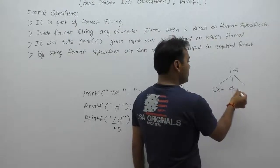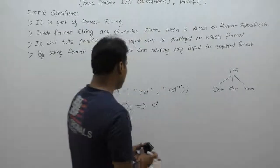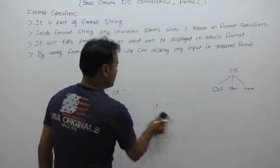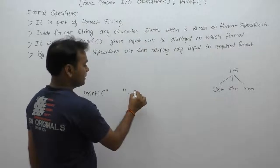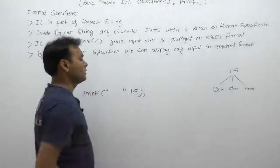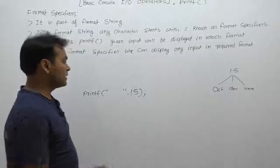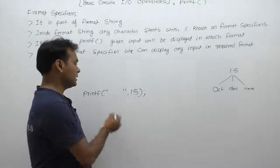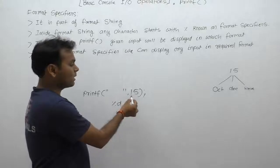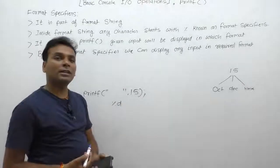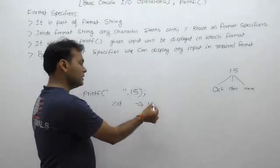The same value can be displayed in different number systems. For example, the number 15 can be represented in decimal, octal, or hexadecimal. If we supply 15 inside printf directly without any format specifier, printf does not know in which format to display it. Therefore, we must supply the corresponding format specifier. If we supply %d, which means decimal number system, then since any integer is by default considered decimal, 15 is printed directly as 15 with no conversion.